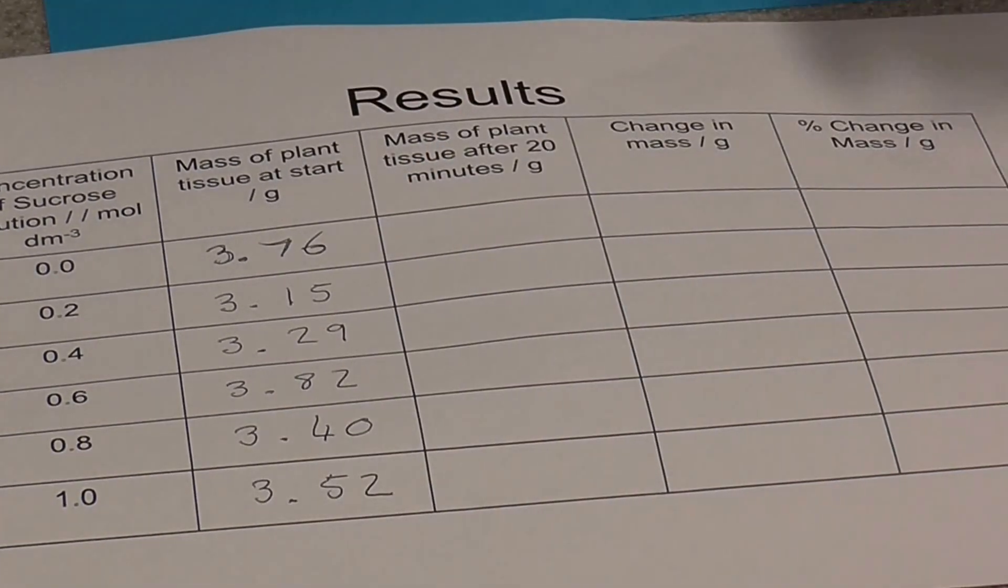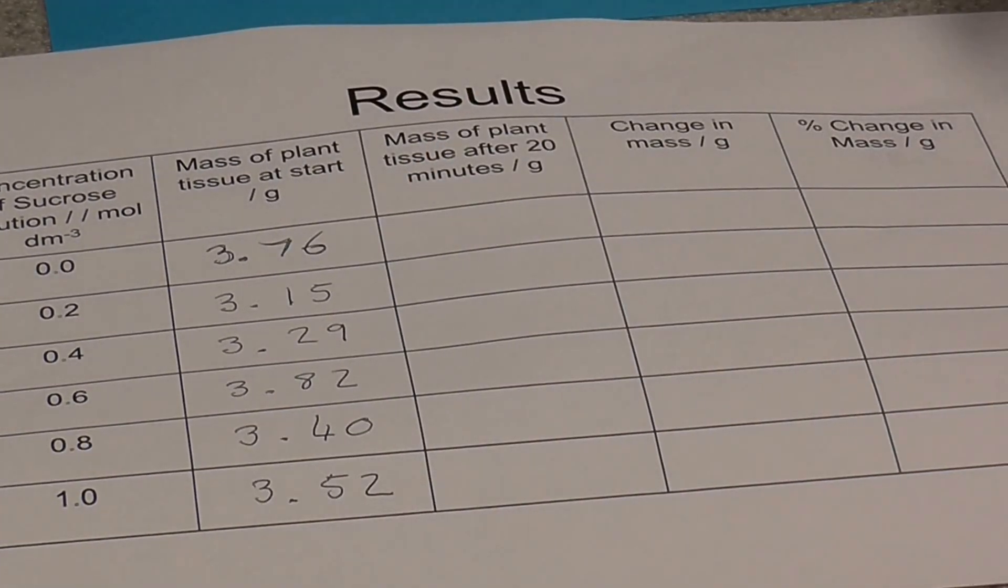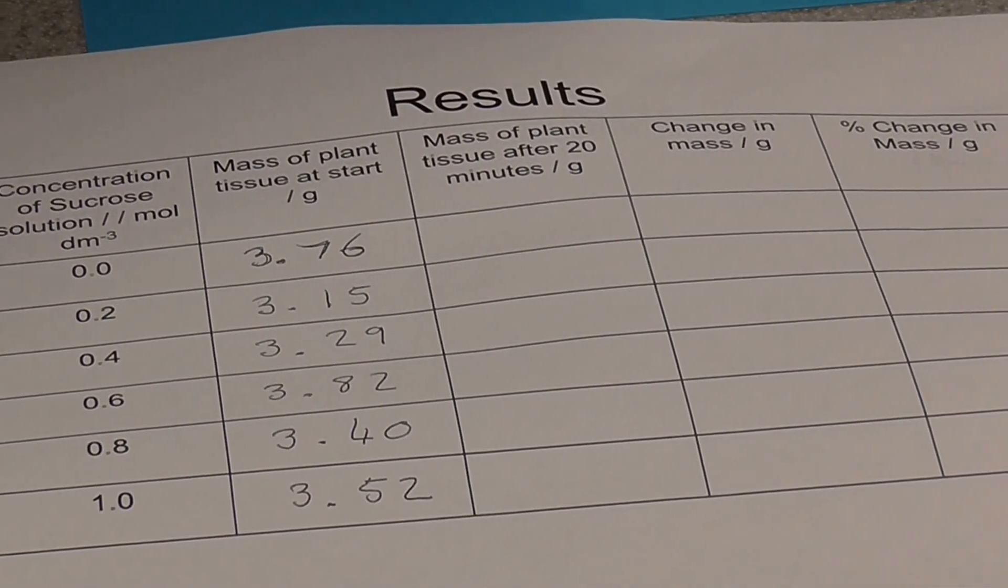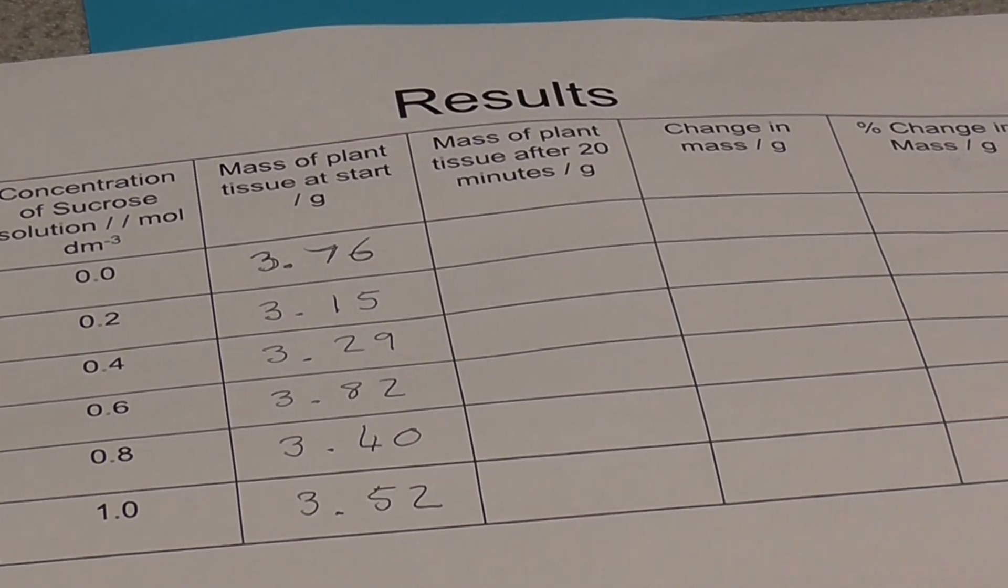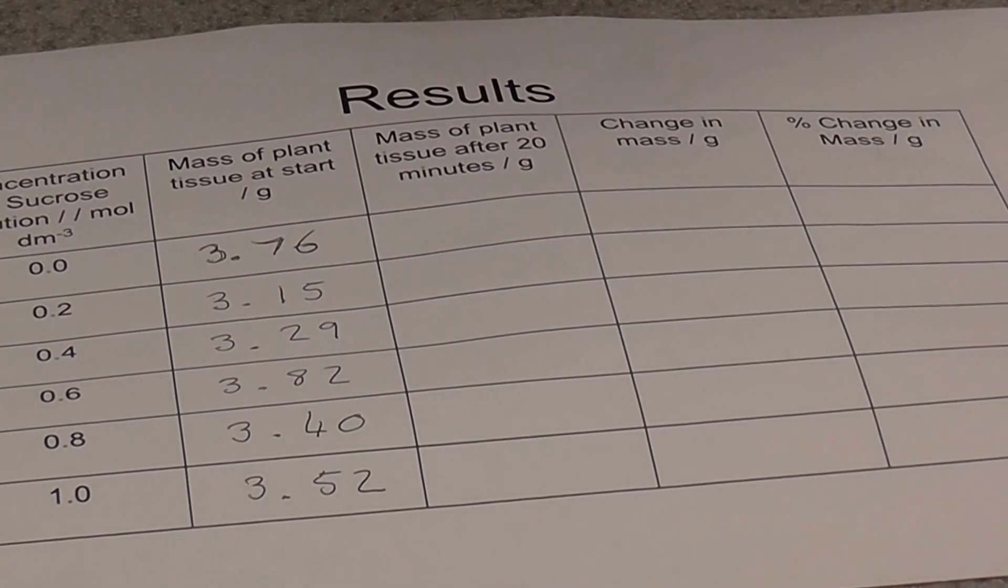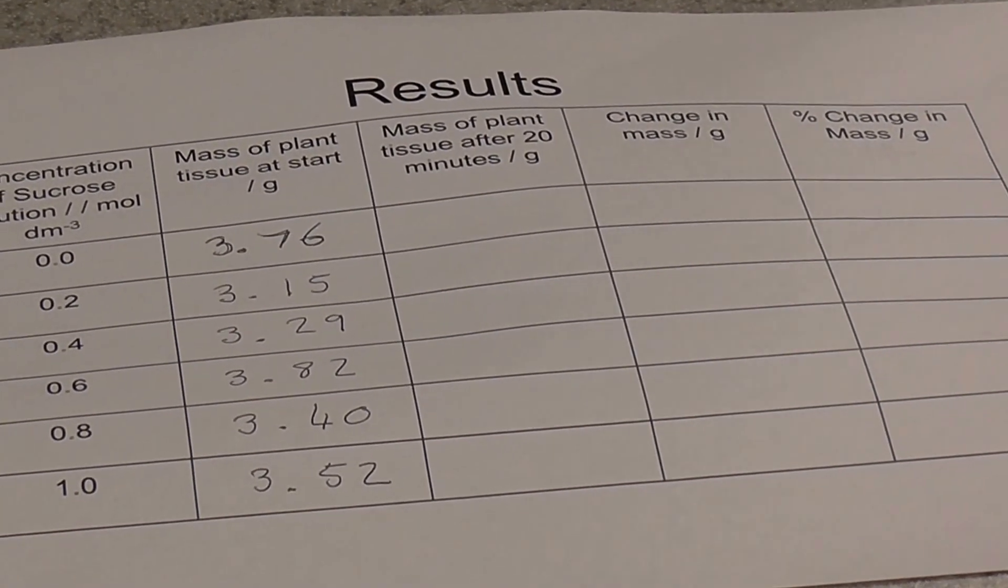As soon as you've weighed every single potato chip, you then need to actually go over to your water bath and place each chip in the correctly labeled solution. Then you need to leave them in the water bath, set your timer, and 20 minutes should be plenty of time for this experiment to work.